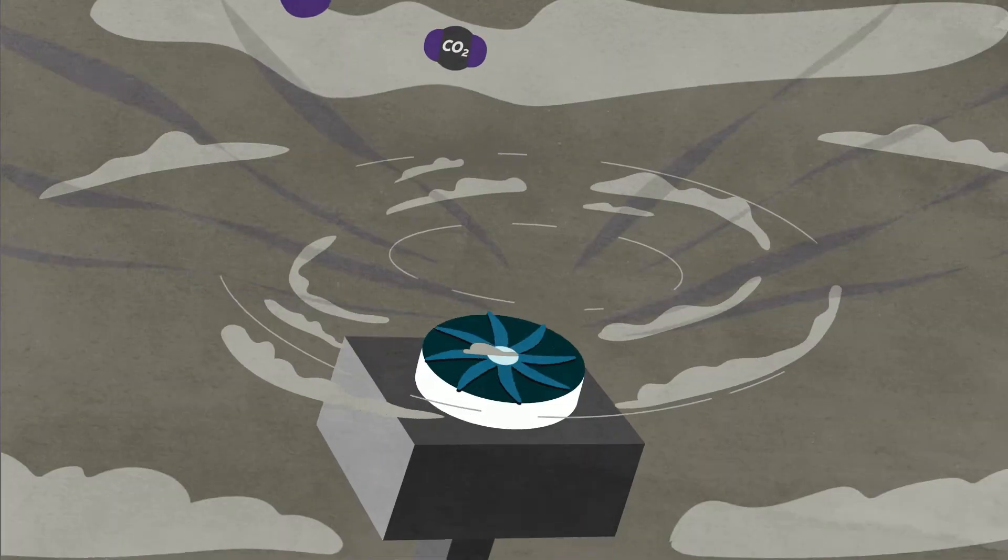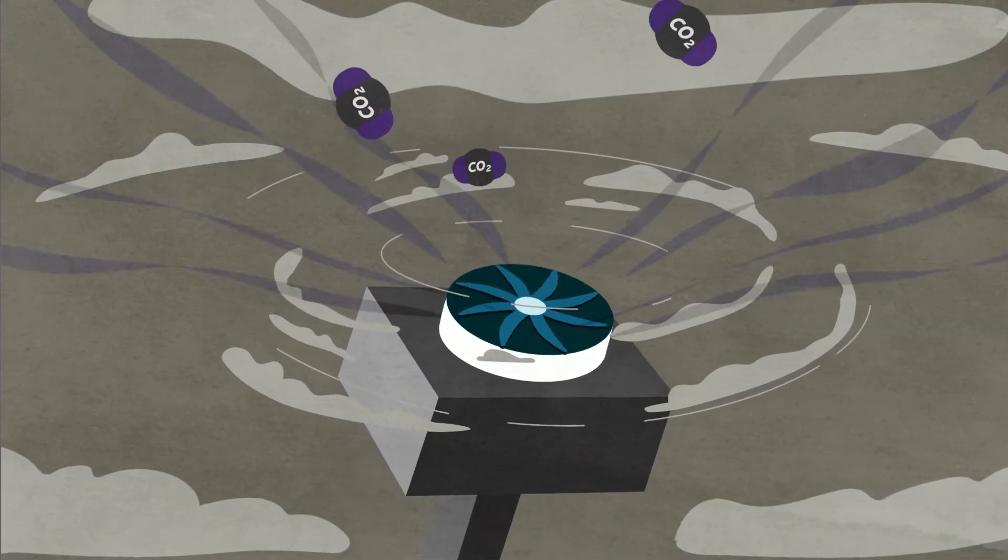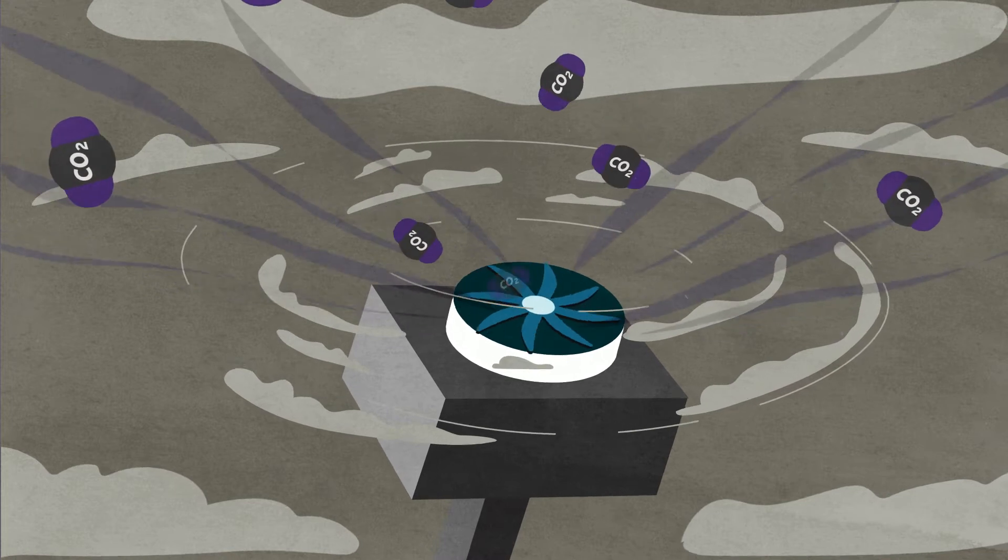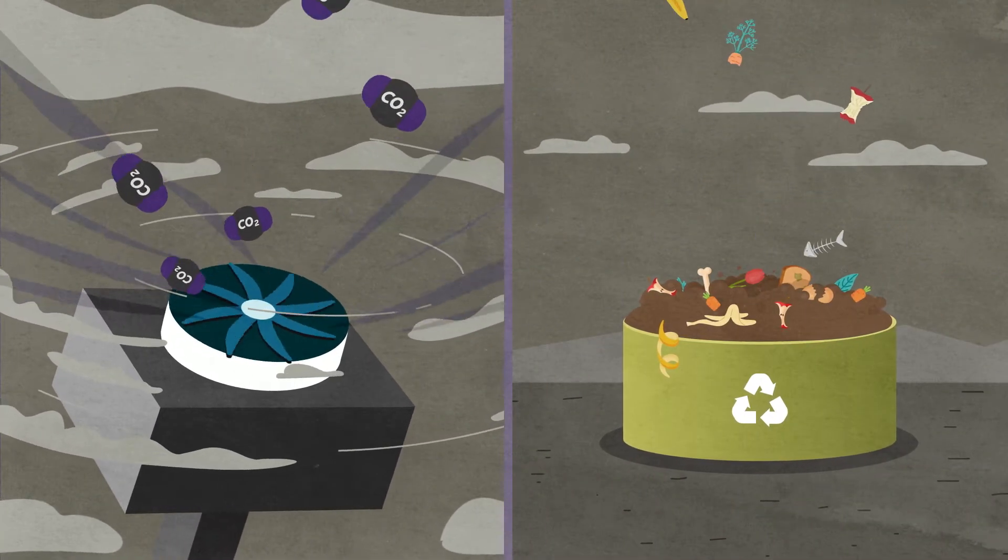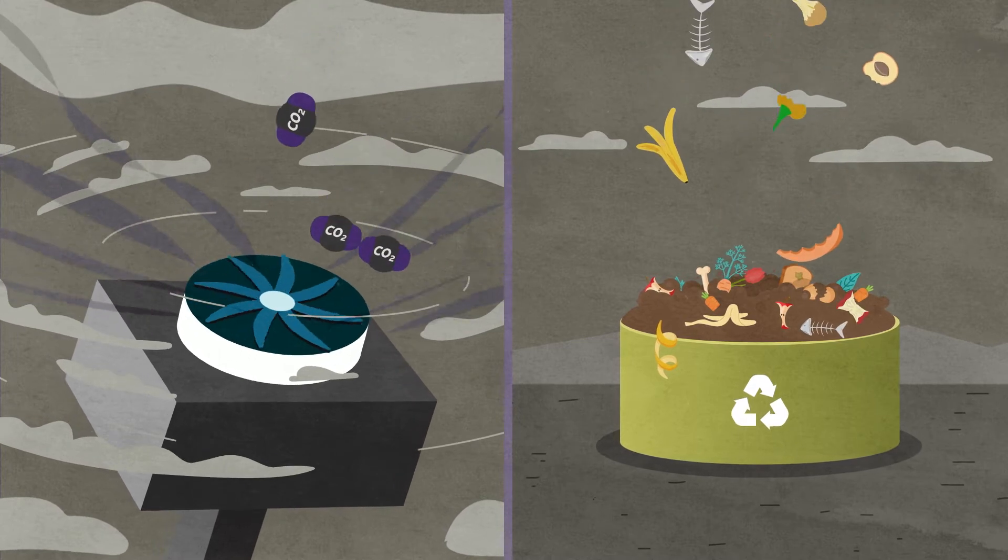However, CCS can play a role in carbon removals if the captured and stored CO2 comes from the atmosphere, for example through direct air capture or the use of sustainable biomass.